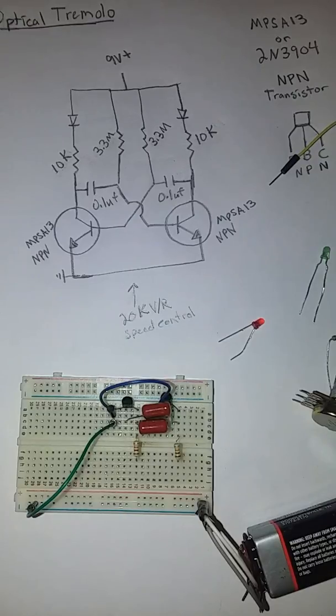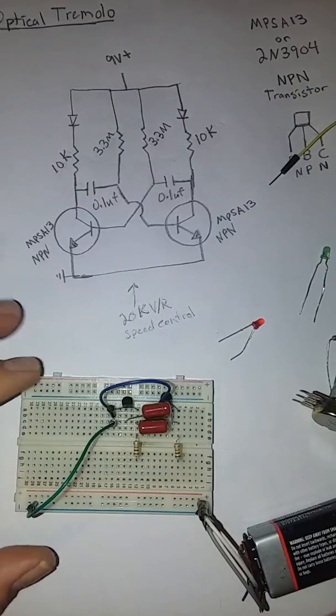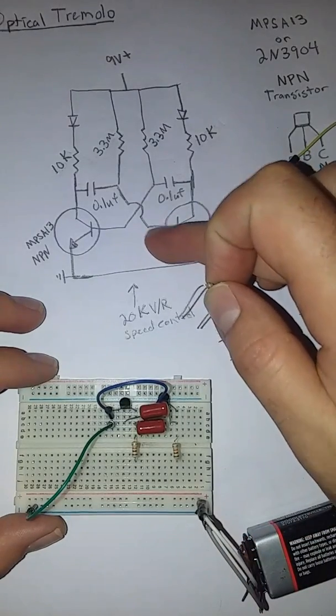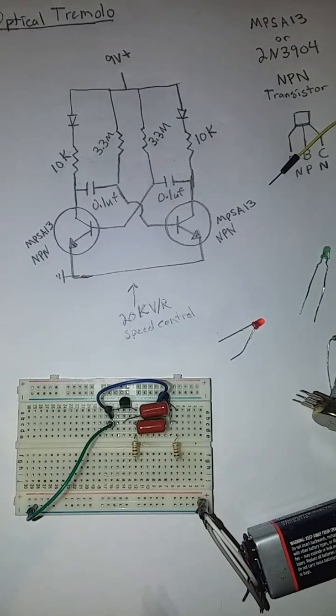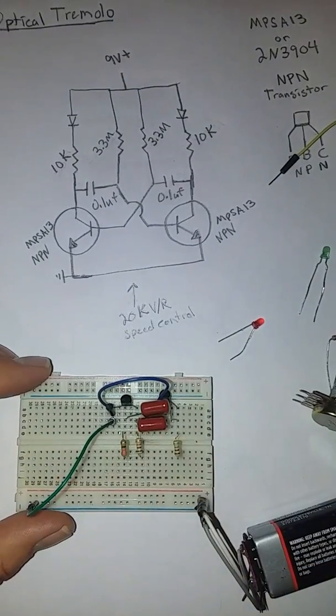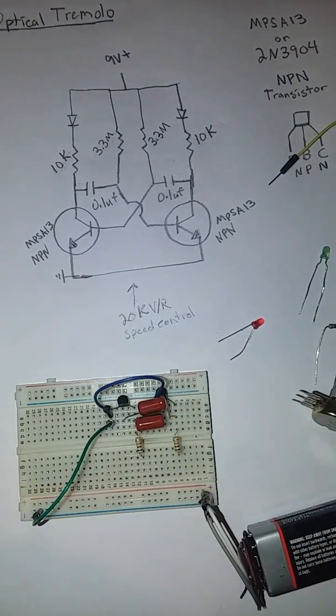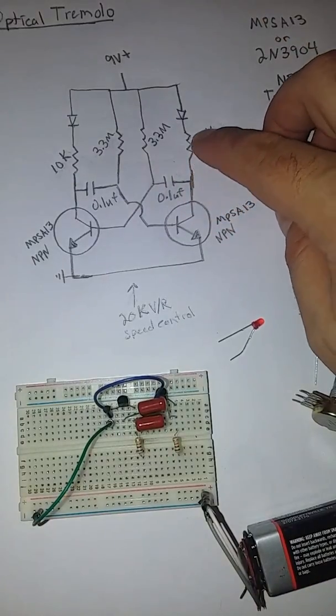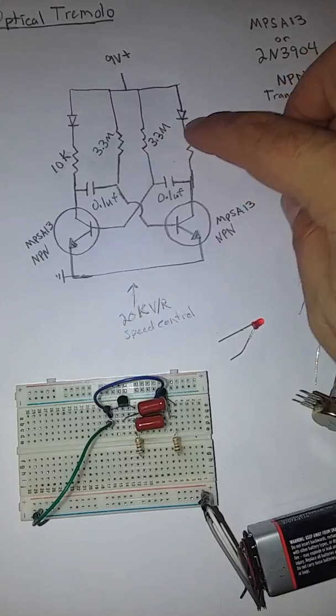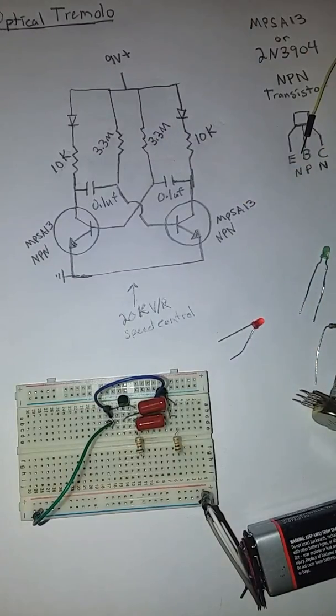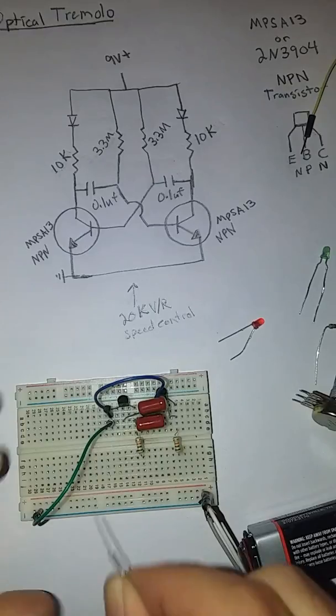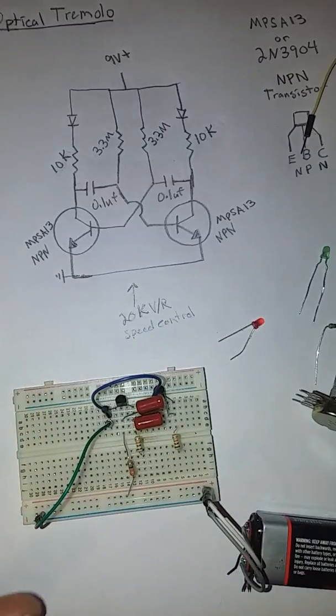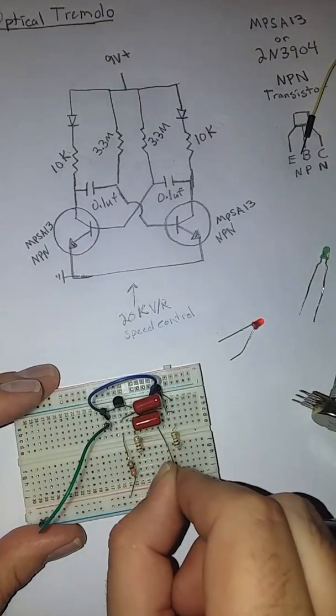You could probably go less than 1 meg if you wanted to go even faster. You can use the 3.3 meg resistor. And actually that's going to run straight to our 9 volts. You'll notice our other 10k resistors did not run directly to 9 volts. We still have an LED to put between there.